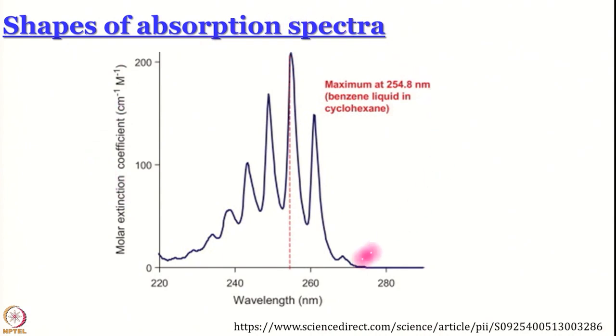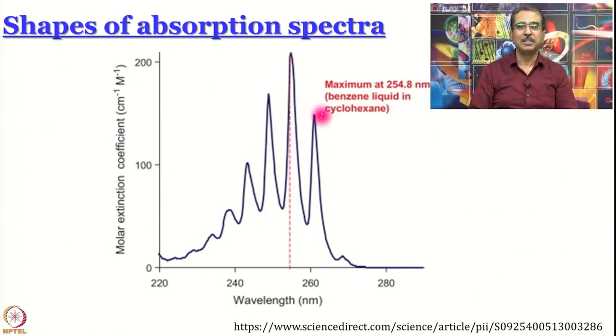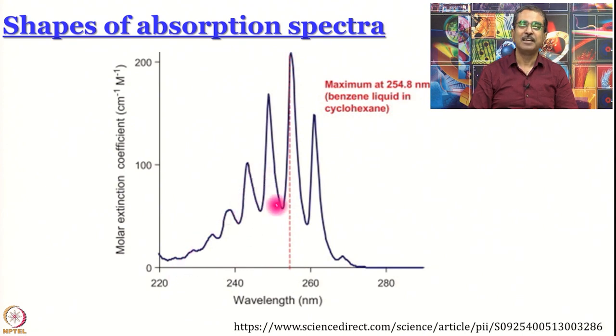We are discussing absorption spectrum, and we start with the same opening slide as the last lecture, but now perhaps you understand it a little better. Here is an absorption spectrum of benzene dissolved in cyclohexane. Now you know what molar extinction coefficient is and why the unit is centimeter inverse per molar. Now you know why the x-axis is in wavelength rather than in electron volts. And now you can guess that this structure comes because these are vibronic transitions, and the different values of molar extinction coefficient for different wavelengths tells us that the probability of these vibronic transitions are not all the same.